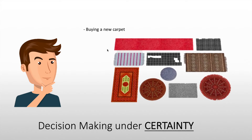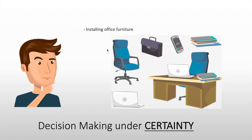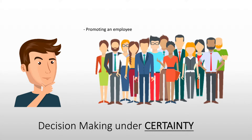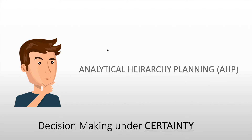Examples of decision making under certainty include buying a new carpet, installing office furniture, or promoting an employee. In these particular problems, the decision maker knows with certainty what he or she will have as a consequence. One of the most common and famous algorithms for this is called the analytical hierarchy planning. We will not be dwelling on this method in this video, but I will leave a link below for your reference.